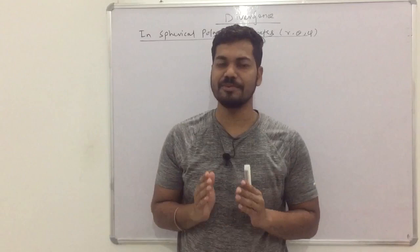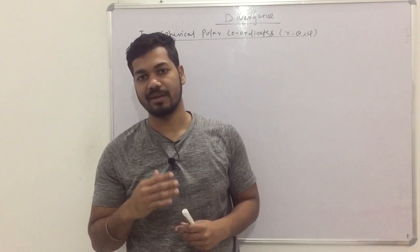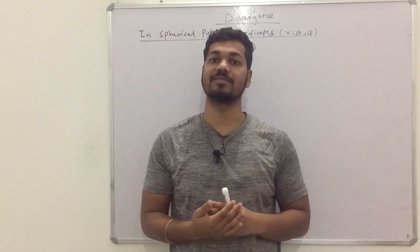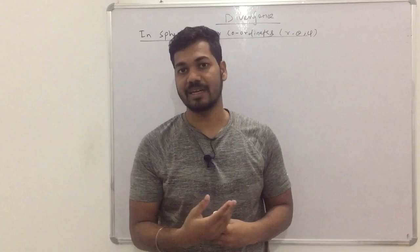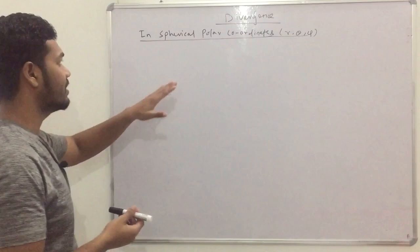Hey guys, what's up? I am Dinesh. Welcome you all to the online lecture. In this video, we are going to discuss how to find the divergence of a vector field when the vector is in cylindrical coordinates and spherical coordinates. It is very important to know that in electrodynamics, we always deal with spherical and cylindrical symmetry. As the divergence represents whether the field is solenoidal or non-solenoidal, whether the field is electric or magnetic, we must know how to find the divergence in spherical and cylindrical coordinates.